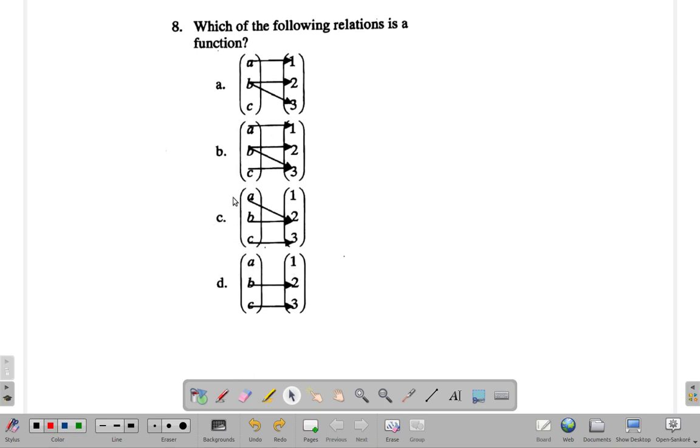These are out. The only one I see having the characteristics of a function is c, because all the elements in the domain—each element is mapped and it's mapped onto one and only one element in the range. A is mapped to two only, b is mapped to two only, c is mapped to three only. You don't have anything mapping onto one, but that's no problem.